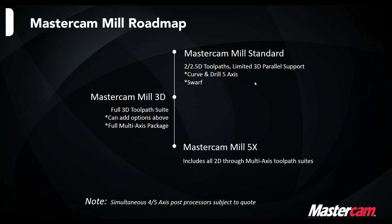I also want to go over how the Mastercam mill roadmap works, because there are a bunch of new options Mastercam added with X9 on how you can configure a multi-axis package. If you have Mastercam Mill Standard, which is the old mill level 1, you can add two multi-axis packages: Curve and Drill 5-axis. Curve is basically a freeform contour 5-axis toolpath with 5, 4, or 3-axis output, and Drill 5-axis works the same way. Swarf is a true 5-axis toolpath that's also available as an add-on.